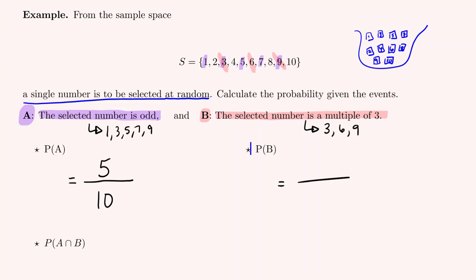The multiples of three in our list are 3, 6, and 9 — that's three times one, three times two, and three times three. So the probability of B, drawing a multiple of three, is three out of ten.